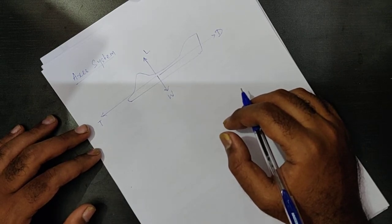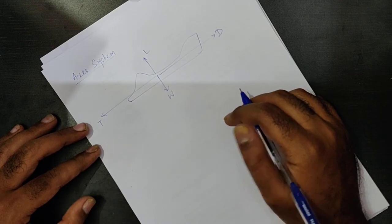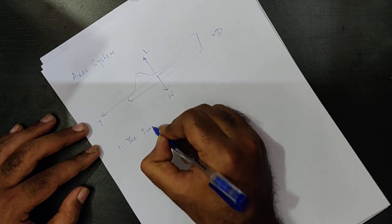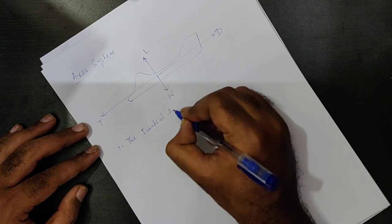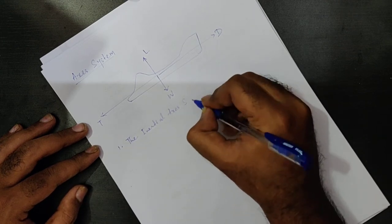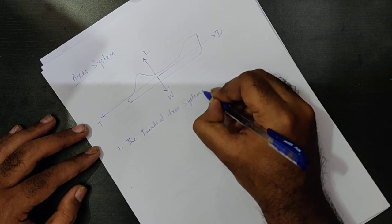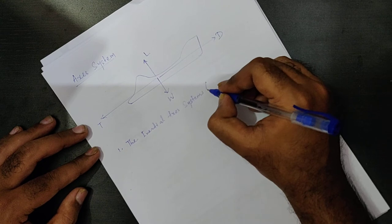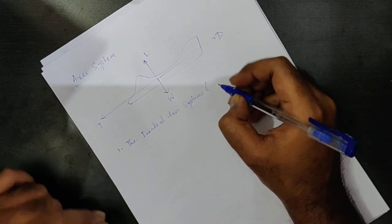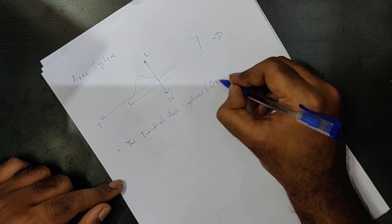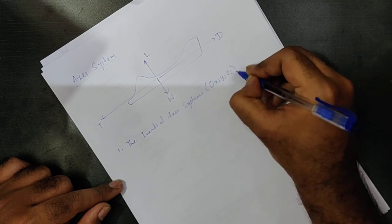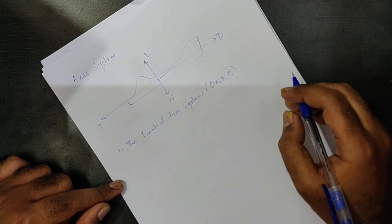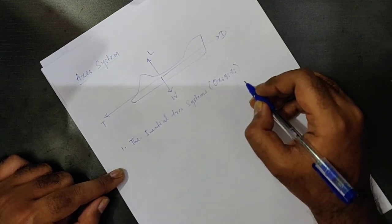Out of many types of conventions, one is the inertial axis system. We can call this O X_I Y_I Z_I. So this is the inertial axis system, and this is one type of system which we usually consider.